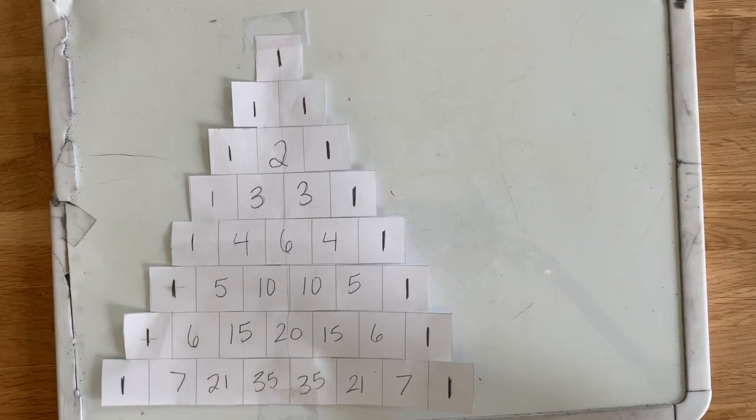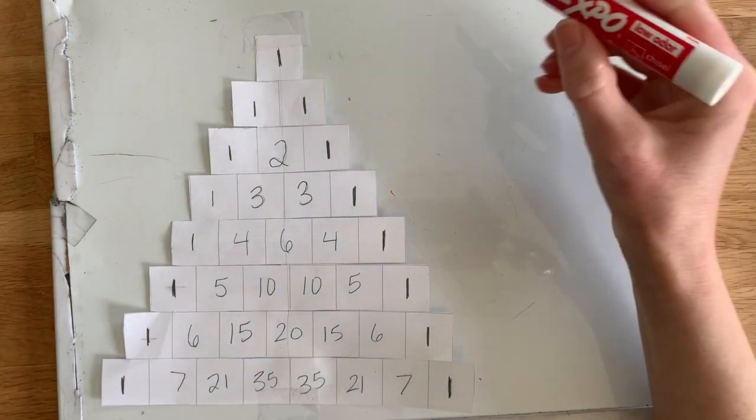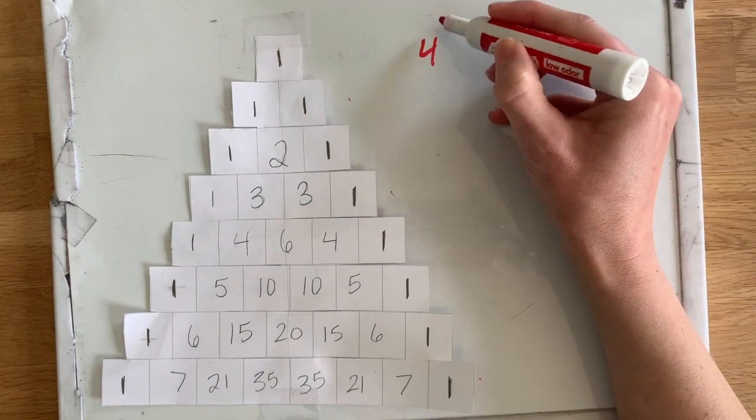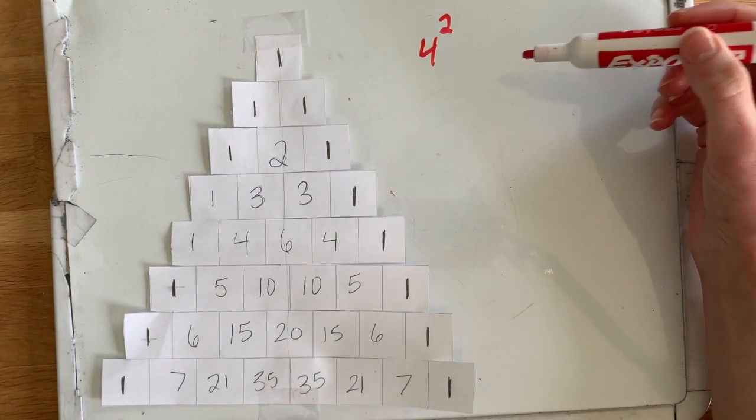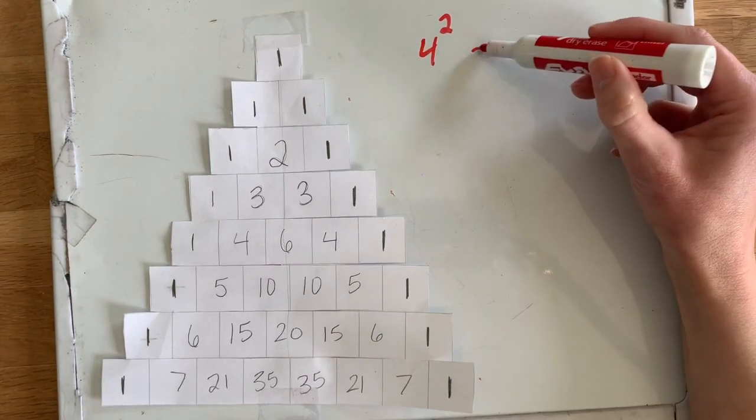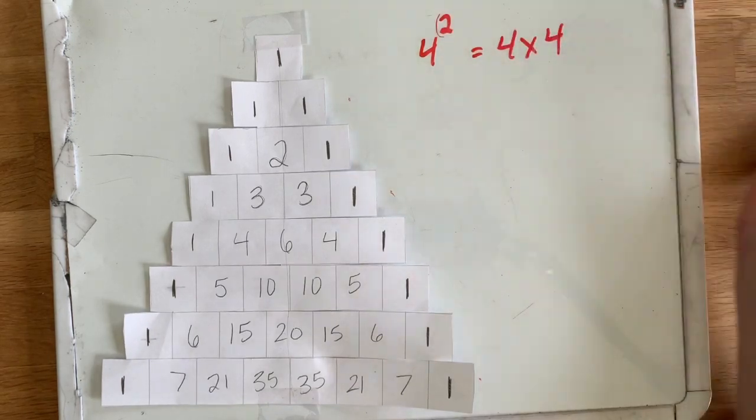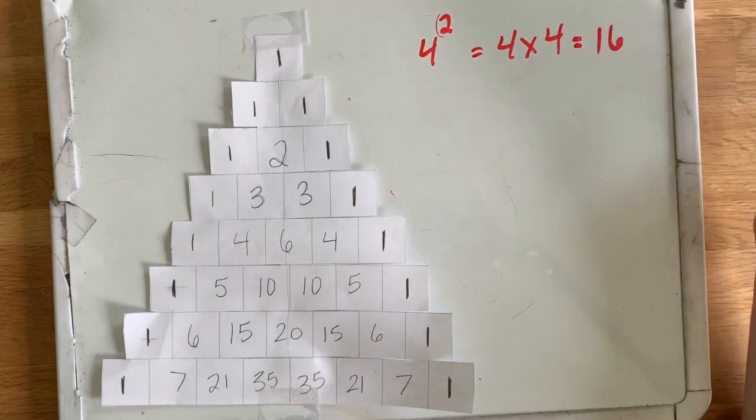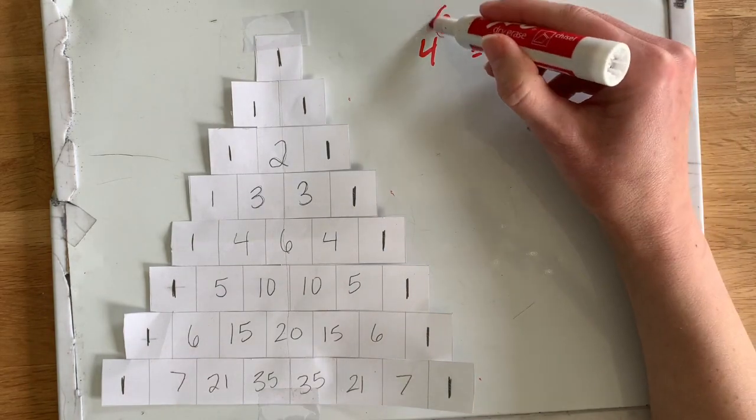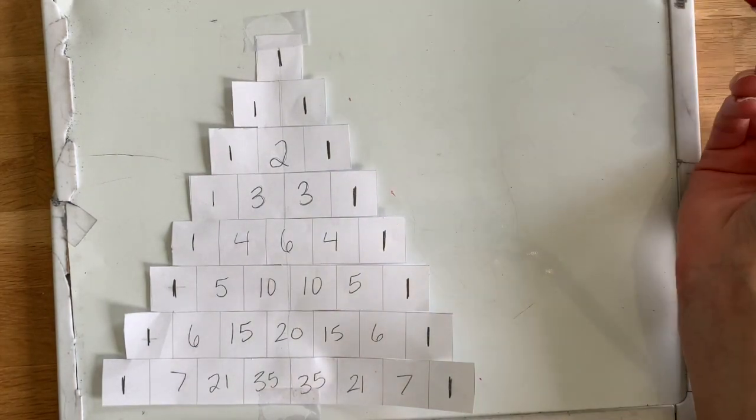The next pattern we can talk about is the exponents of 11. So some of you have had lessons on squaring and exponents. So if we have four squared, we know that represents a square that's made up of four on each side, and we know that means four times four. So this is the exponent right here.